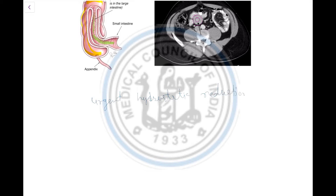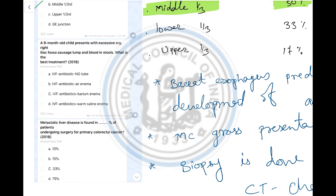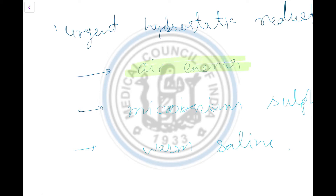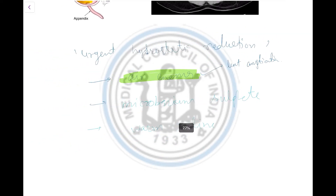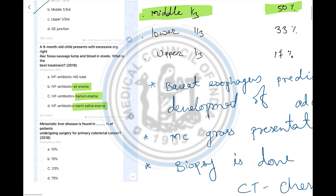Urgent hydrostatic reduction can be done by air enema, barium sulfate, or warm saline. Among these options — air enema, barium enema, and warm saline enema — the best option is air enema, because air enema has the least complications. Urgent hydrostatic reduction can also cause complications like gut perforation, but air enema has the least risk of perforation. So we go with IVF, antibiotics, and air enema. Antibiotics are needed to prevent bacterial infection.